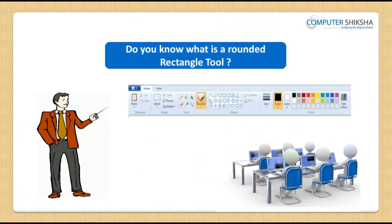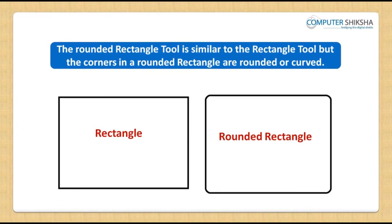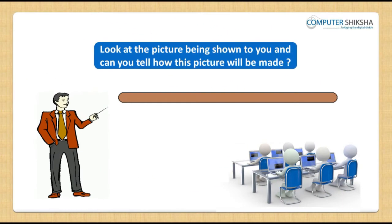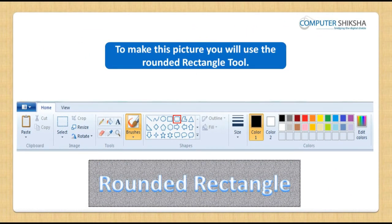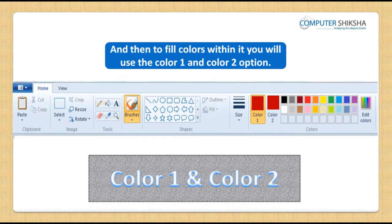Do you know what is a Rounded Rectangle Tool? The Rounded Rectangle Tool is similar to the Rectangle Tool, but the corners in a Rounded Rectangle are rounded or curved. To make a picture with it, you will use the Rounded Rectangle Tool and then to fill colors within it, you will use the Color 1 and Color 2 options.